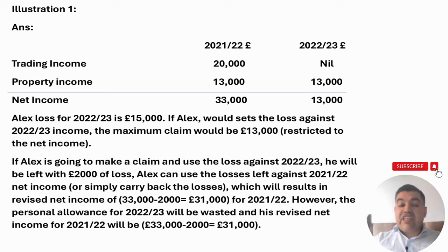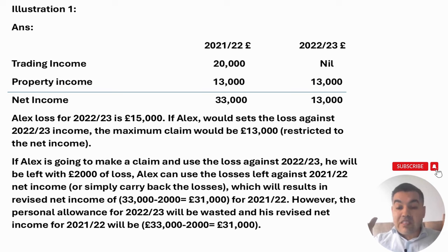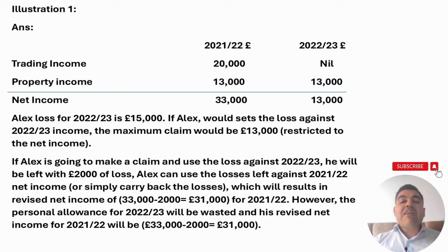Setting up the table: for 2021-22 there was trading income of £20,000 and property income of £13,000, giving net income of £33,000. For 2022-23 there was a trading loss of £15,000 and property income of £13,000. If Alex makes a current year claim, he must pick up £13,000 of trading losses and set against property income of £13,000. Partial claim is not allowed — you cannot use just £400 of losses against the property income.